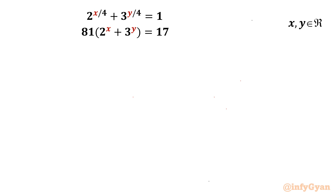Welcome back to Infigyan, my dear friends. Today in this video we are going to take up one system of exponential equations. The equations are 2^(x/4) + 3^(y/4) = 1 and 81 times 2^x + 3^y = 17. We have to find out the real solutions.